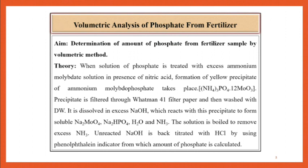The solution is boiled to remove excess NH3. Unreacted NaOH is back titrated with HCl using phenolphthalein indicator, from which the amount of phosphate is calculated.